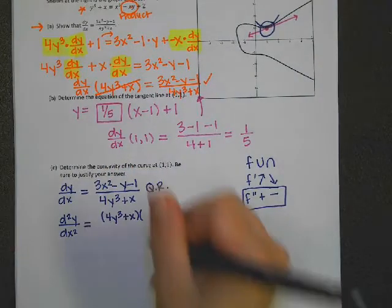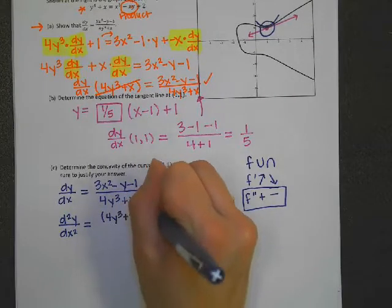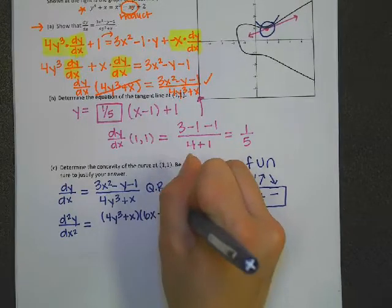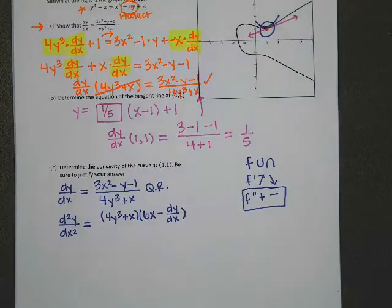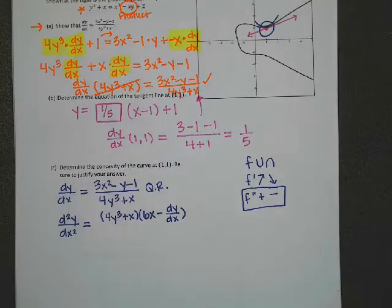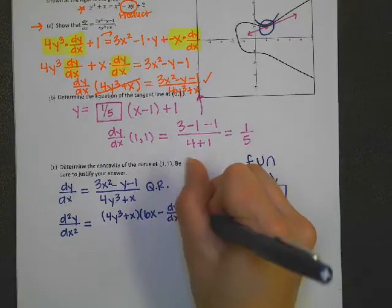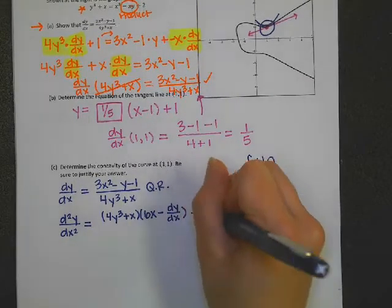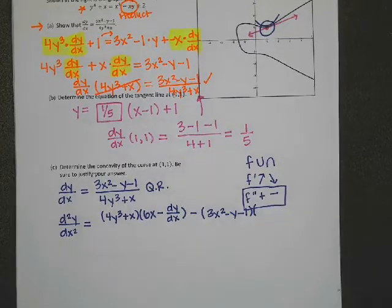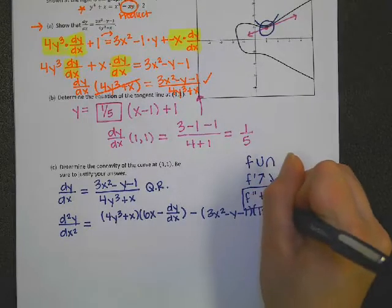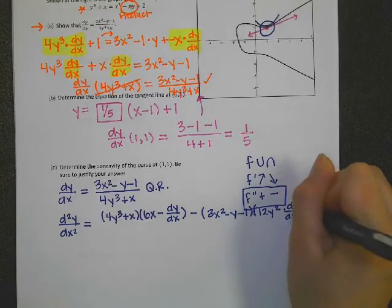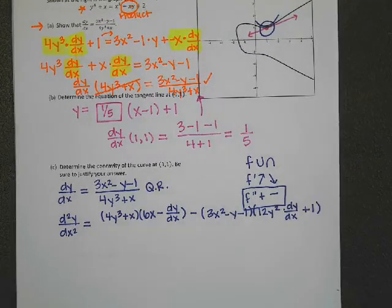d high. So 6x minus the derivative of y with respect to x, and I'm not going to write that minus 0, low d high. I'm still using implicit differentiation to take the derivative of the numerator of this curve. Minus high d low. So 12y² times dy/dx plus 1 would be the derivative of the denominator.